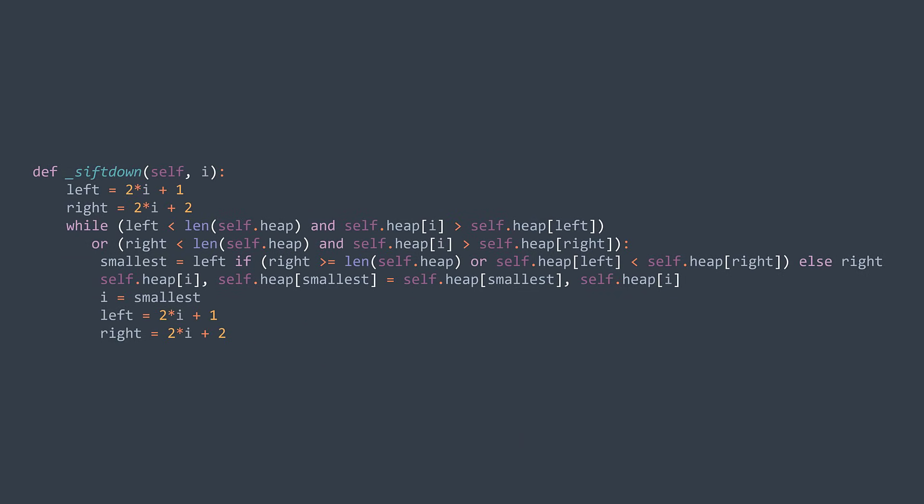In code, we want to sift down the element at index i. We start by calculating the indexes of the left and right children. We determine the smallest child: it's the left child if the right one doesn't exist or the left one is smaller than it; otherwise the smallest is the right child. Once we find the smallest, we swap between it and node i, update i because it took the place of the smallest, and recalculate the indexes of left and right for the next iteration. That's it.